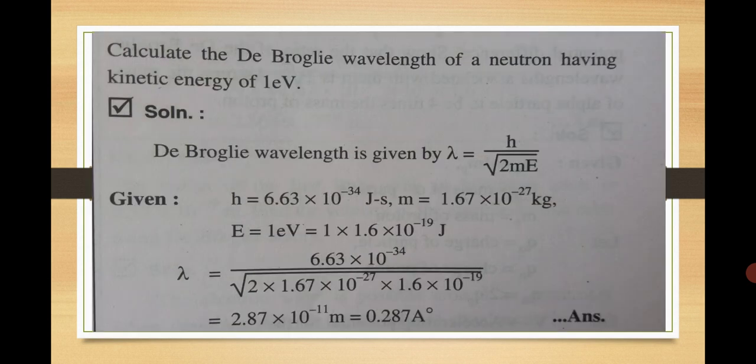Now for the neutron having kinetic energy of 1 electron volt, calculate the de Broglie wavelength. Again, we consider de Broglie's wavelength in terms of energy: lambda = h upon under root of twice m times e. Planck's constant h = 6.63 × 10⁻³⁴ joule seconds, mass of neutron = 1.67 × 10⁻²⁷ kg, and kinetic energy is 1 electron volt, so we multiply by 1.6 × 10⁻¹⁹. Calculating, we get 2.87 × 10⁻¹¹ meters, which is 0.287 angstroms.